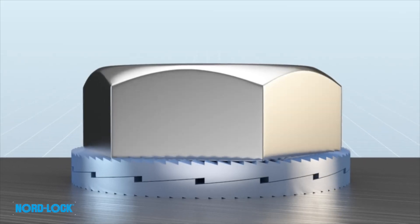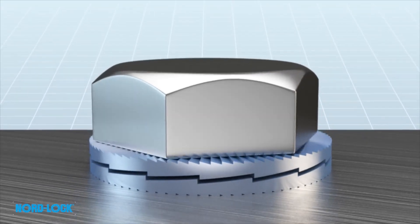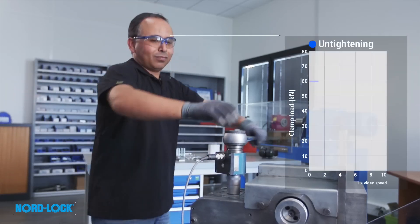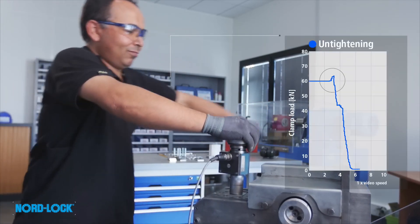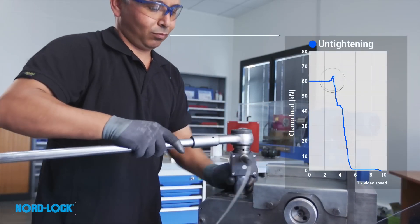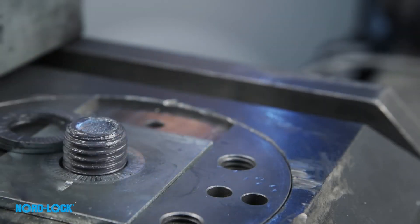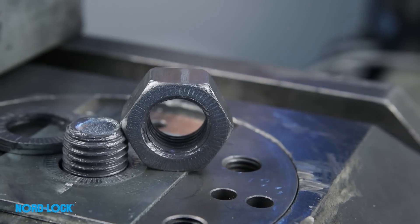Disassembly is simple. We see the top washer override the bottom washer, causing an increase in load during untightening. This is proof of the principle. To properly verify the locking effect, we also check that we have clear impression marks on the nut and on the underlying surface.